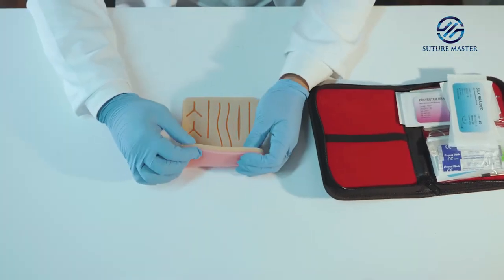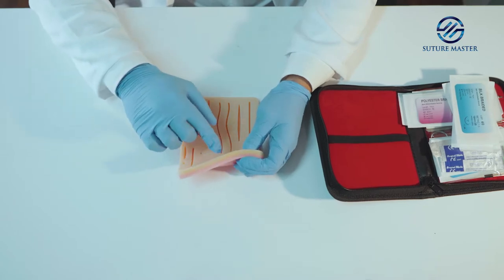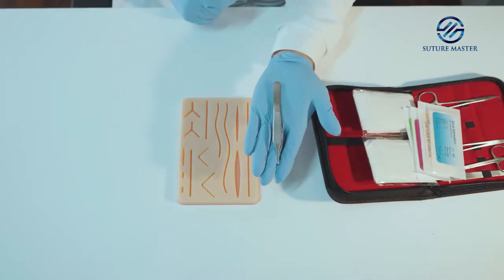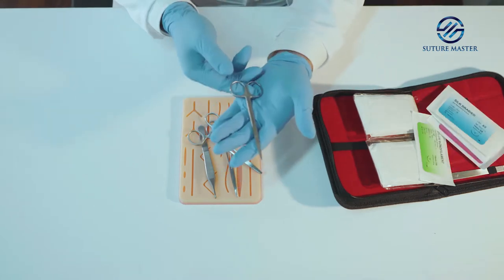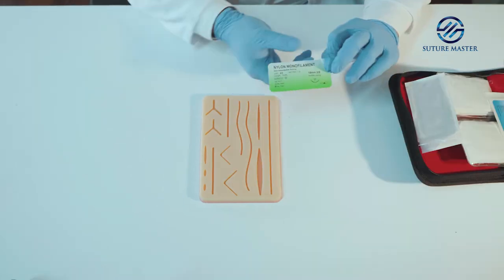The suture pad comes with three layers simulating epidermis, fat, and muscle. For this procedure we're going to be using the red tooth forceps, the needle holder, the scissors, and the nylon monofilament.